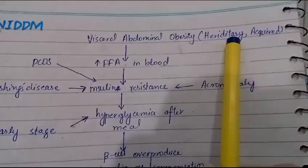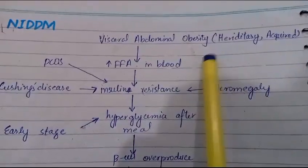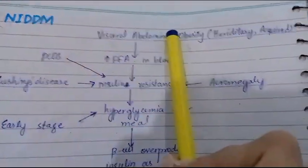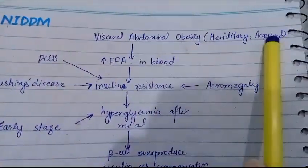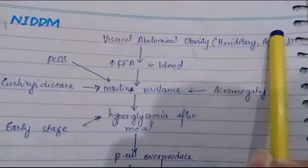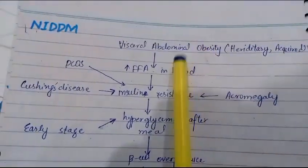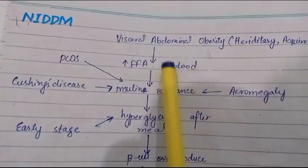Hereditary tendency is very important. Some people have a hereditary tendency to develop obesity. So now, visceral abdominal obesity increases the level of free fatty acids in the blood.